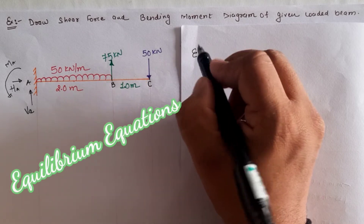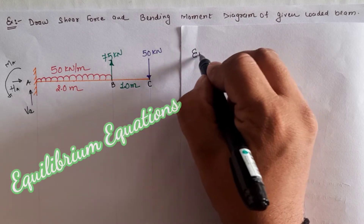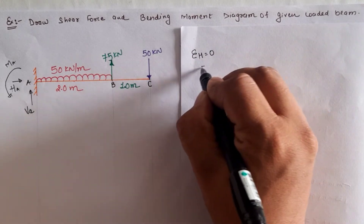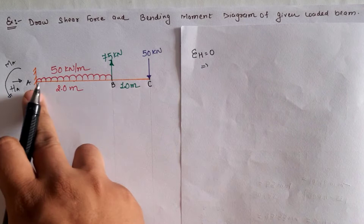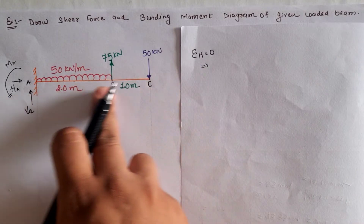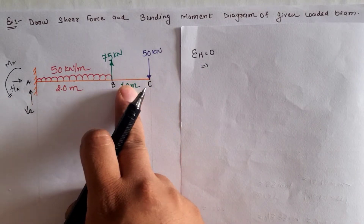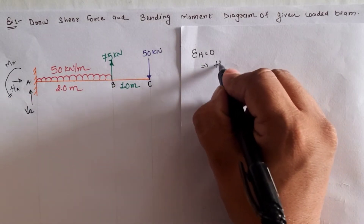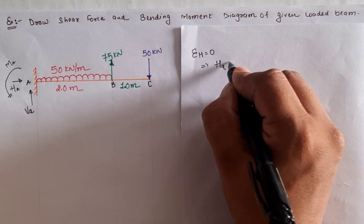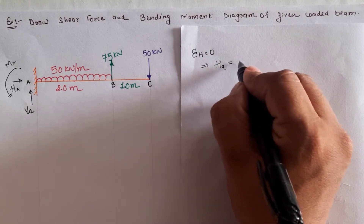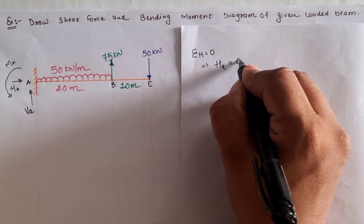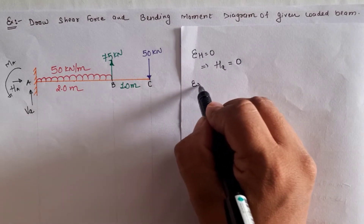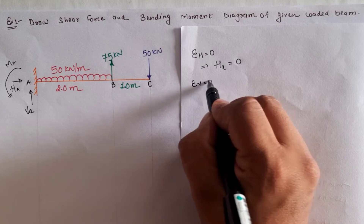Using the three equilibrium conditions, first ΣH = 0. Due to the absence of horizontal or inclined loading, the horizontal reaction at location A, HA, is equal to zero.